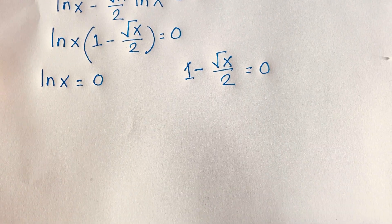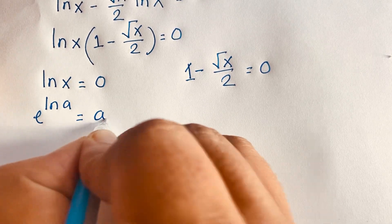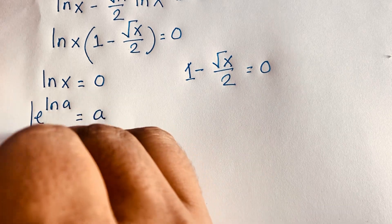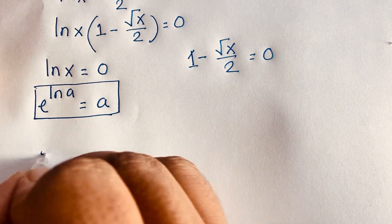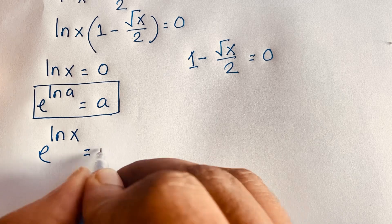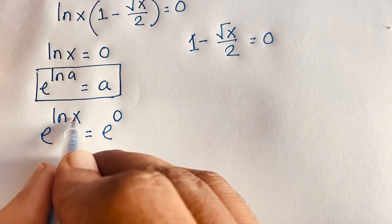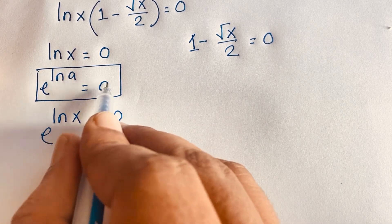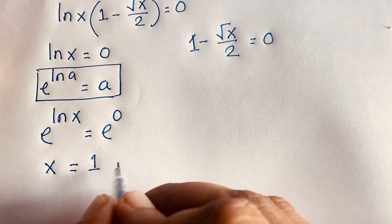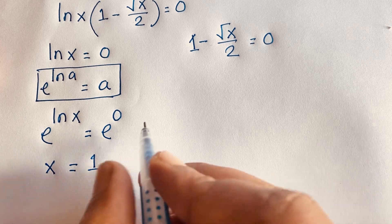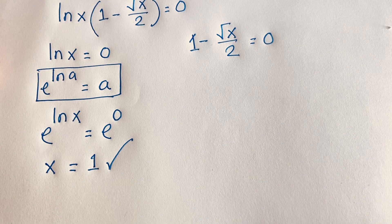We know that e to the power ln a equals a. So applying this law to ln x equals zero: raising e to both sides gives e to the power ln x equals e to the power zero, which means x equals one, since e to the power zero equals one. So our first answer is x equals one.